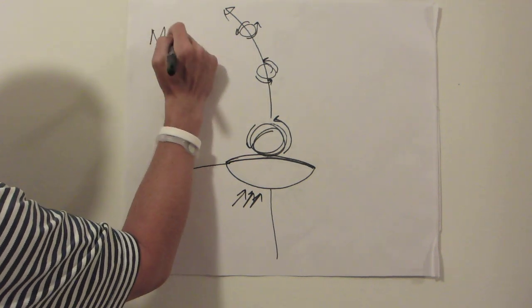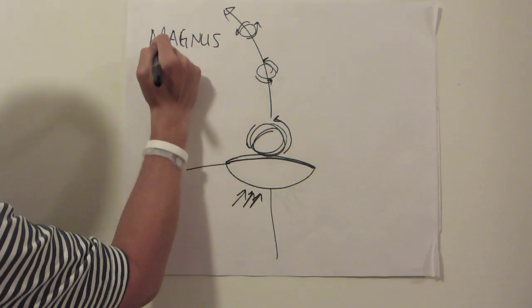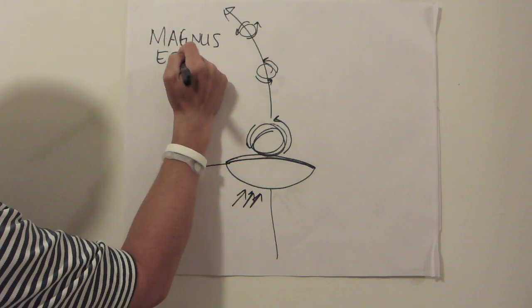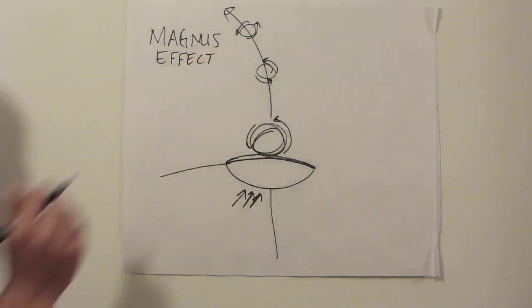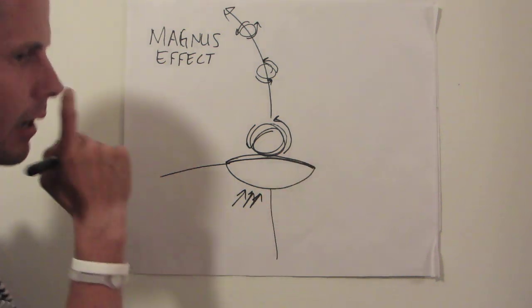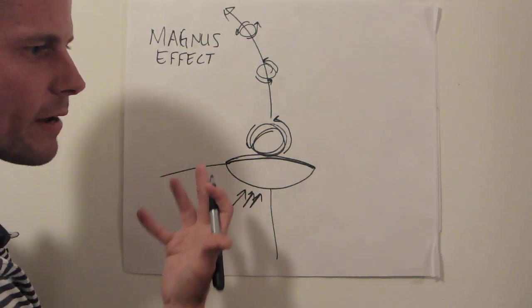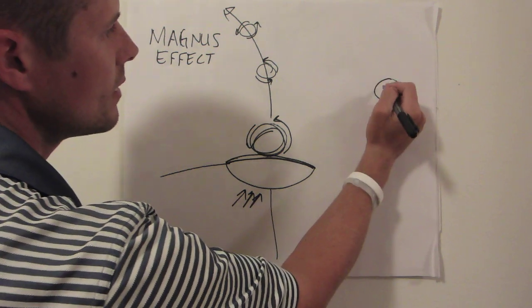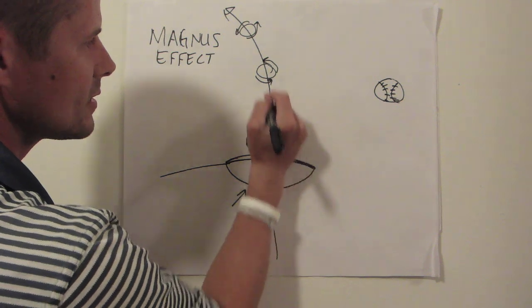Now there's a guy who put a name to this effect, if you will. His last name is Magnus. And he told us that a ball in flight will curve if it has spin, only if it has resistance on the side of the ball, one side of the ball. And the only way it can have resistance is if it has some sort of way of creating resistance, like a baseball with its seams and a golf ball with its dimples.